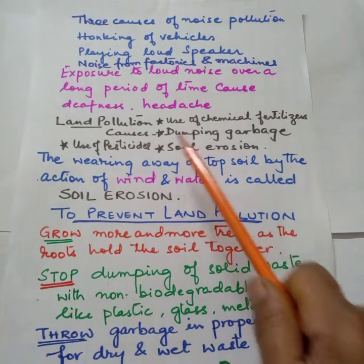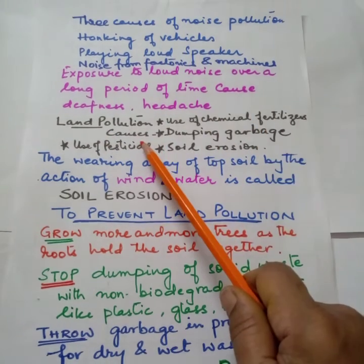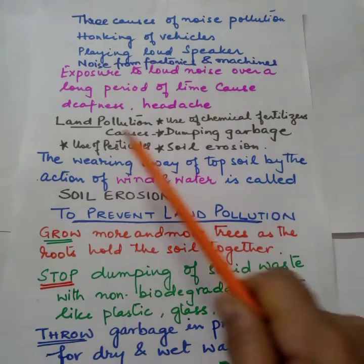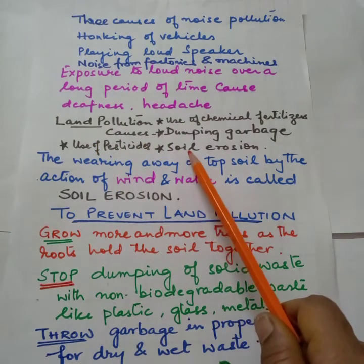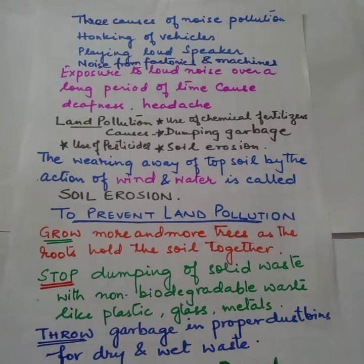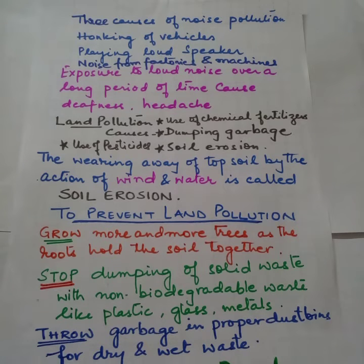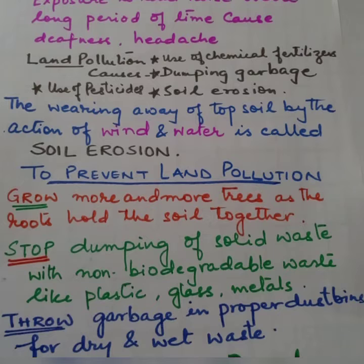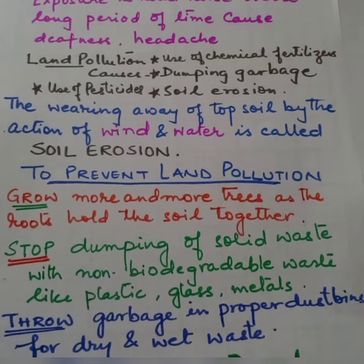Land pollution: use of chemical fertilizers, dumping garbage, use of pesticides, soil erosion. Chemical fertilizers और pesticides जो जमीन में मिलते हैं, तो वो मिट्टी को भी खराब कर देता है — मिट्टी को poisonous कर देता है। Dumping garbage — हम गंदगी जो dump कर देते हैं और जो नहीं सड़ते हैं, मिट्टी के साथ मिलते नहीं हैं, वो जमीन पे रह जाते हैं।